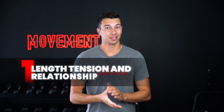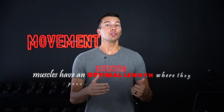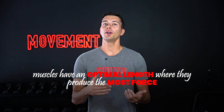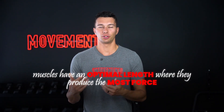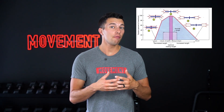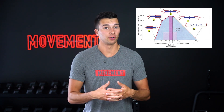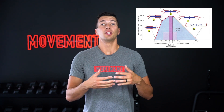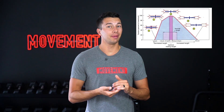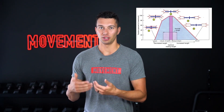Let's start with principle number one: length-tension relationship. The first thing to know is that muscles have an optimal length where they produce the most force. That's because of how actin and myosin overlap at the sarcomere level. With too much overlap or not enough overlap, crossbridge formation is reduced and the muscle can't produce as much force.